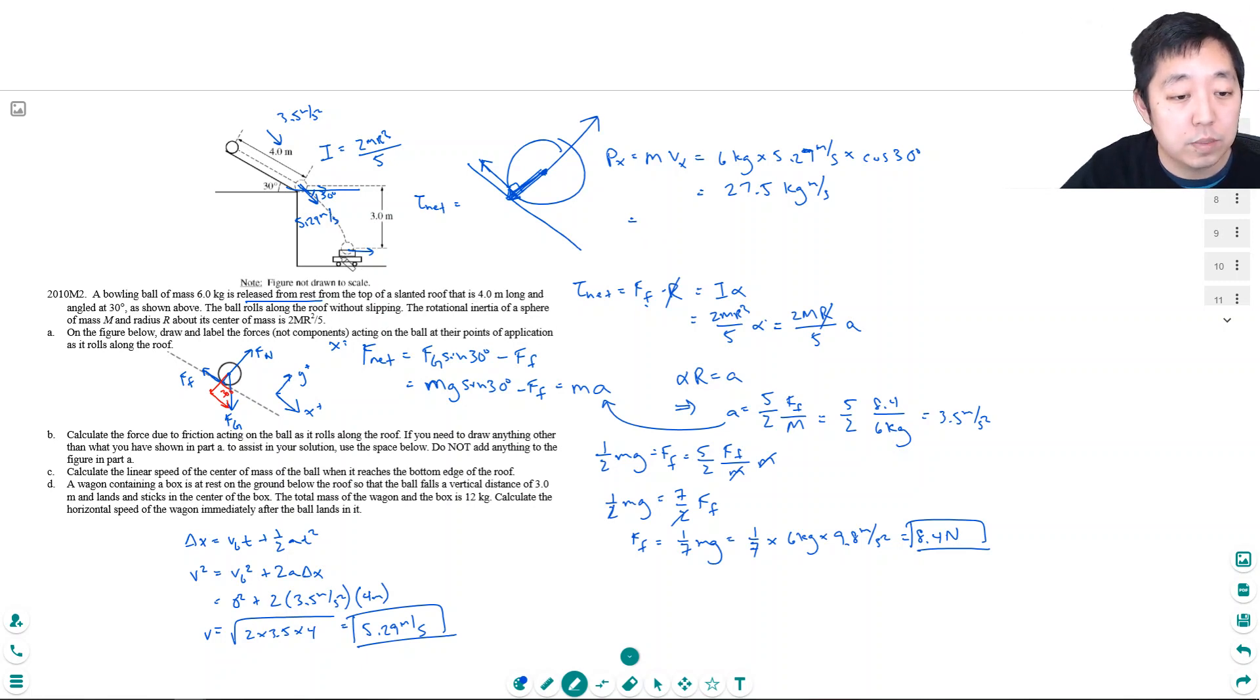So, it's the total mass of the wagon in the box is 12 kilograms times v. So, v is equal to 27.5 kilograms meters per second divided by 12 kilograms. I get 2.29 meters per second. Hope you found that helpful.